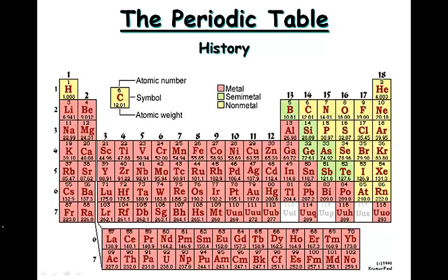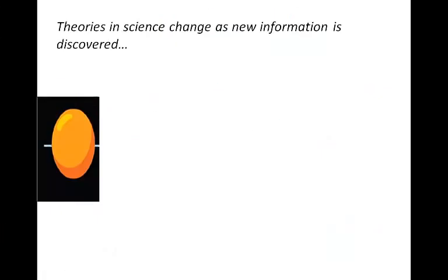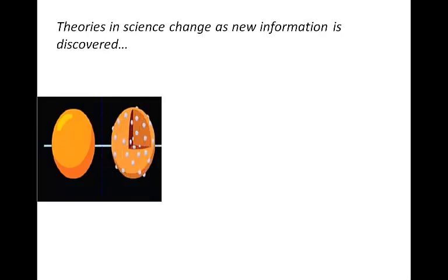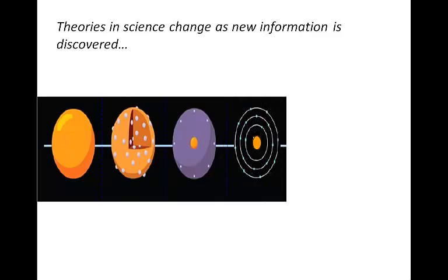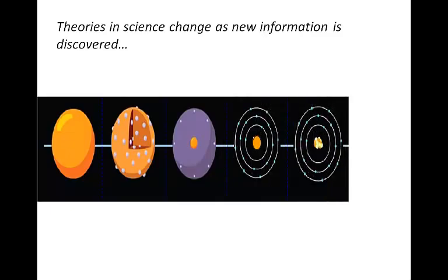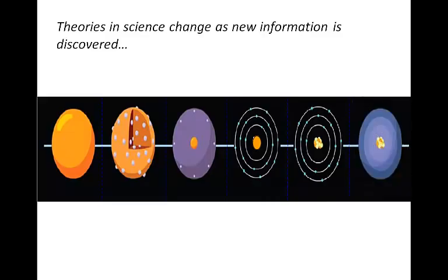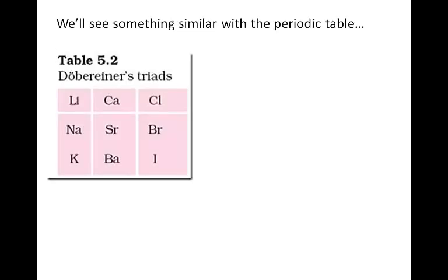Theories in science change as new information is discovered. Consider the change in atomic theory as we move from Dalton's model of the solid sphere, to Thomson's plum pudding model, to Rutherford's nuclear atom, to Bohr's energy level atom, to Chadwick's addition of the neutron, to the modern electron cloud theory. As new information is discovered, theories can change. We see something similar with the periodic table.